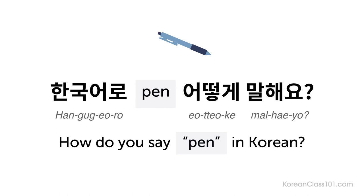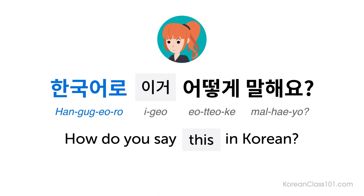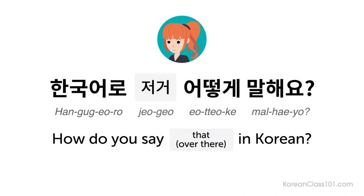If you want to keep the conversation in Korean, you can say 'How do you say this in Korean?' Simply replace the English word with 이거, meaning 'this.' When using this pattern, you may want to gesture or point at the thing you want to know the Korean word for: 한국어로 이거 어떻게 말해요? — How do you say this in Korean? If the thing is far away, you can also use 저거, meaning 'that over there': 한국어로 저거 어떻게 말해요? — How do you say that in Korean?